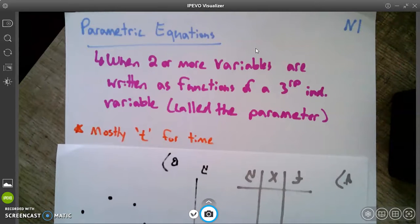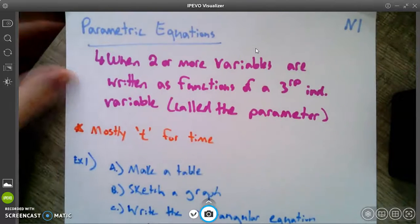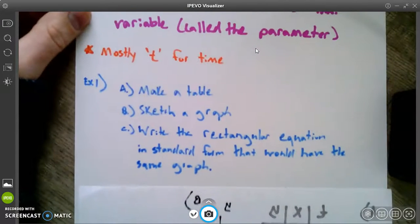It's when we have two or more variables that are written as a function of some new variable, a third independent variable. Independent variables are the ones we control. And then those other ones are the dependent ones. So they're going to be affected by whatever this new parameter is. And most of the time we're going to use t for time.